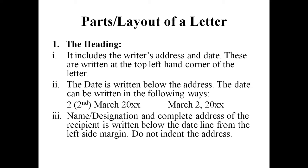For the date, you can write '2nd March' and the year, or you can write in the format of month, date, and year — first the month, then the date, comma, and then the year. These are the ways we follow while writing a letter. Then after writing the date, the name, designation, and complete address of the recipient is written below the date line from the left side margin.